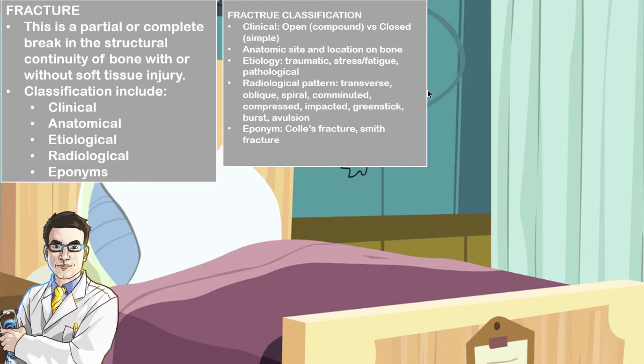In the radiological classification, some patterns include transverse, oblique, spiral, comminuted, compressed, impacted, greenstick, burst, as well as avulsion fractures.